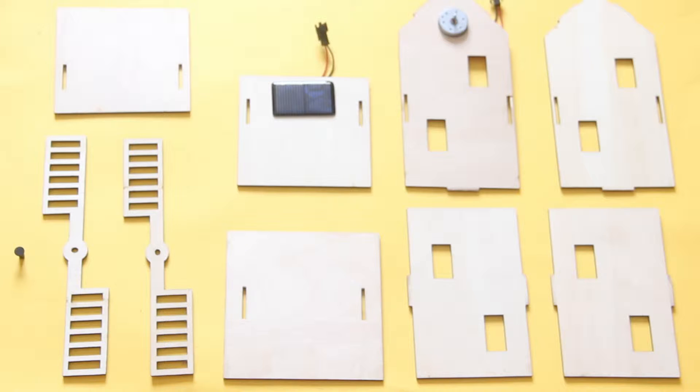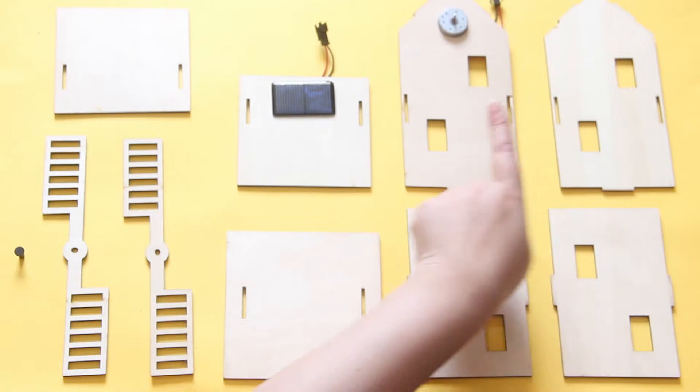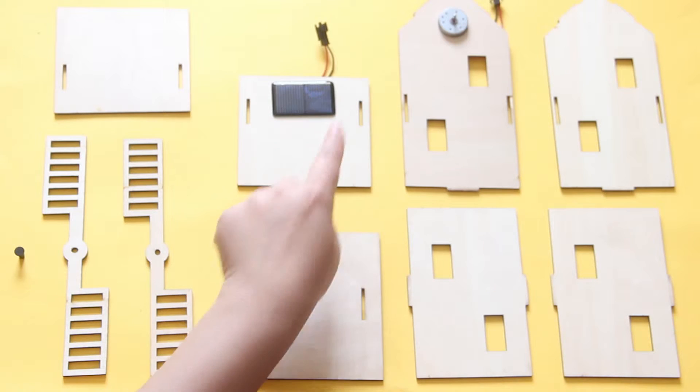In front of us we have one plastic cap, two blades, one base, two side parts, one back part, one front part with a motor, one rooftop with a solar panel, and one rooftop without it.